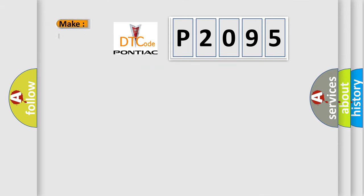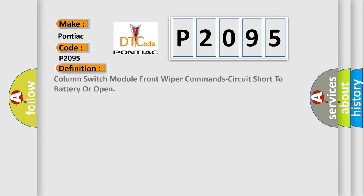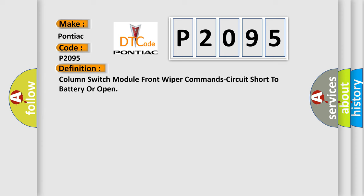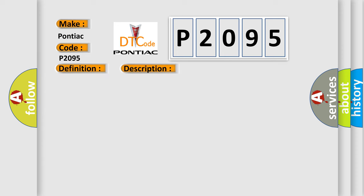So, what does the diagnostic trouble code P2095 interpret specifically for Pontiac car manufacturers? The basic definition is: Column switch module front wiper command circuit short to battery or open. The front wiper washer switch is located on the left multifunction switch and is hardwired to the body control module. BCM voltage is provided to the front wiper motor from fuse F8930A in the front power distribution center.